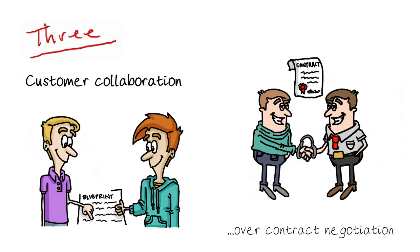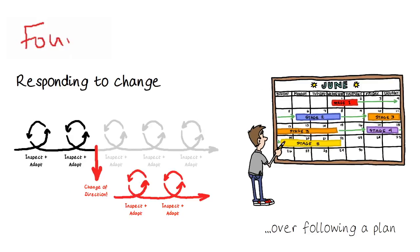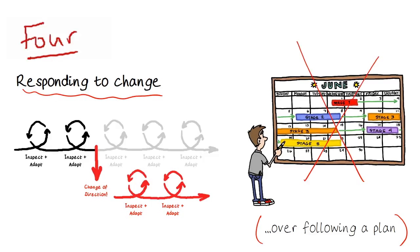And finally, the fourth value: responding to change is more important than following a plan. Of course, you do need to plan what you're going to achieve in the short term for the next iteration, but we're building software for today, not tomorrow. So it's a waste of time and effort to produce enormous plans that predict two years into the future. Agile recognizes that software projects are unpredictable and there will be changes.